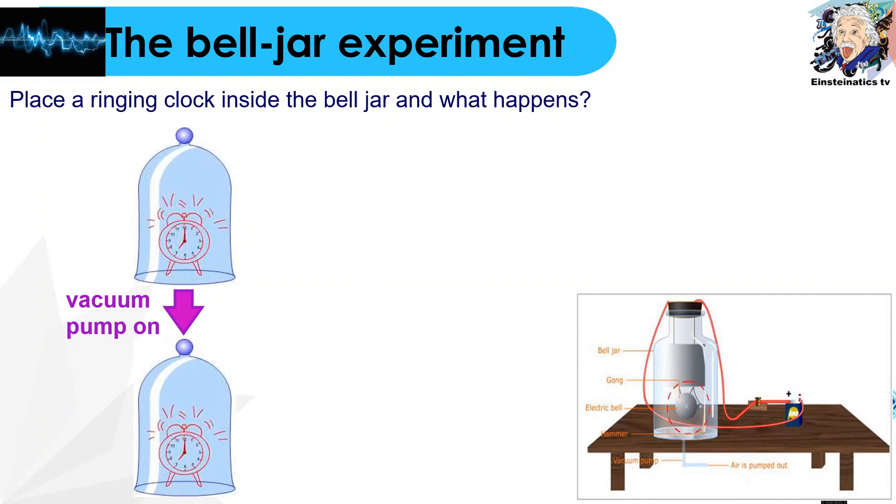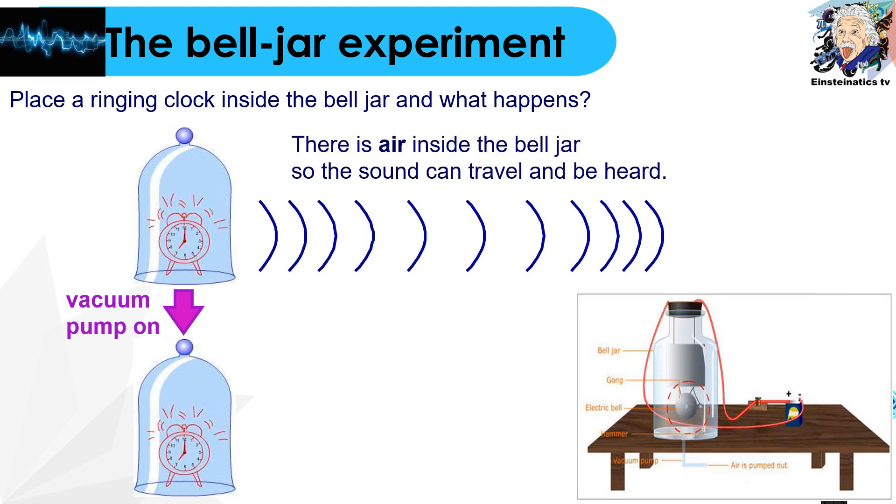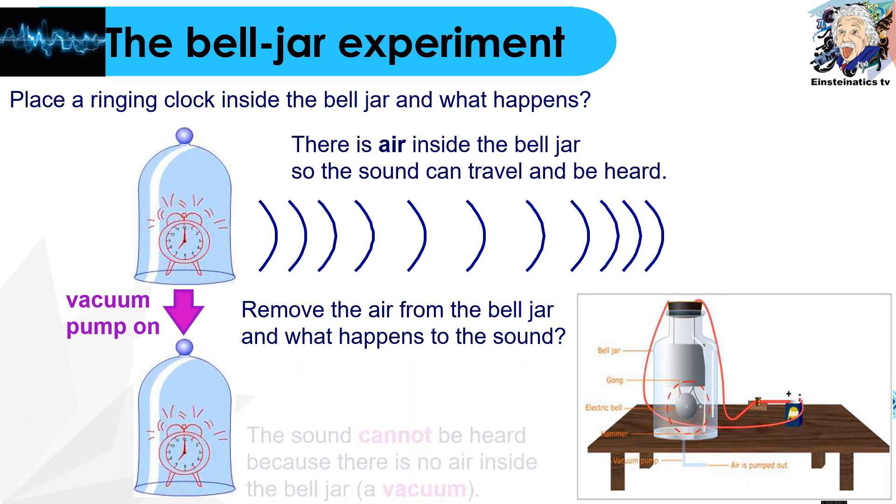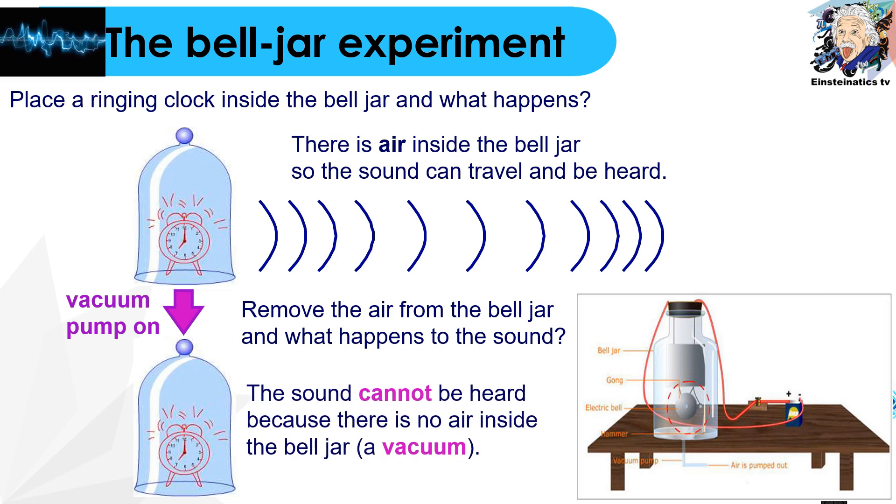In order to prove that sound needs a medium to pass through, we can use the bell jar experiment. If we place a ringing clock inside the bell jar, and there is air inside the bell jar, then the result would be you can still hear the sound. However, if you remove the air from the bell jar, the sound cannot be heard because there is no more medium to pass through.